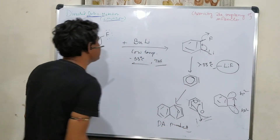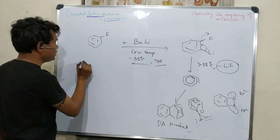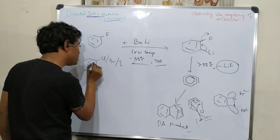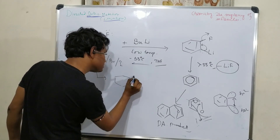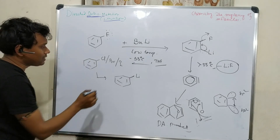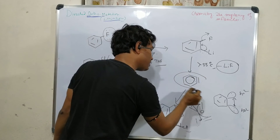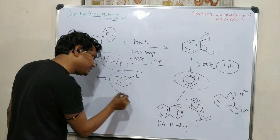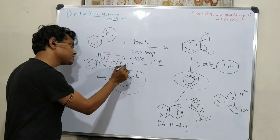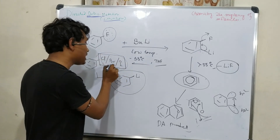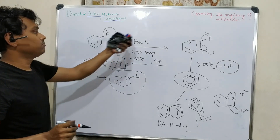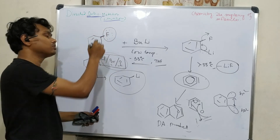This is the Diels-Alder product. What is unique about this example? If instead of fluorobenzene we had used chlorobenzene, bromobenzene, or iodobenzene, the product would have been the aryllithium reagent, not benzyne. In the case of fluorobenzene, benzyne is produced because the C–F bond is stronger due to multiple bond character (bent bond). This is the uniqueness of the fluorobenzene ortho-lithiation reaction.